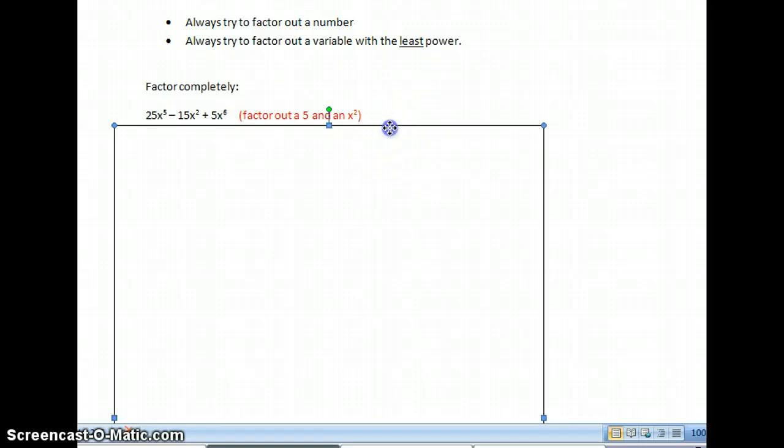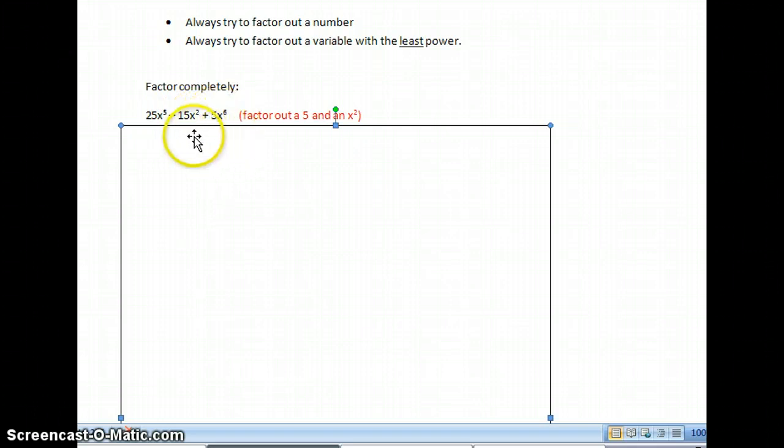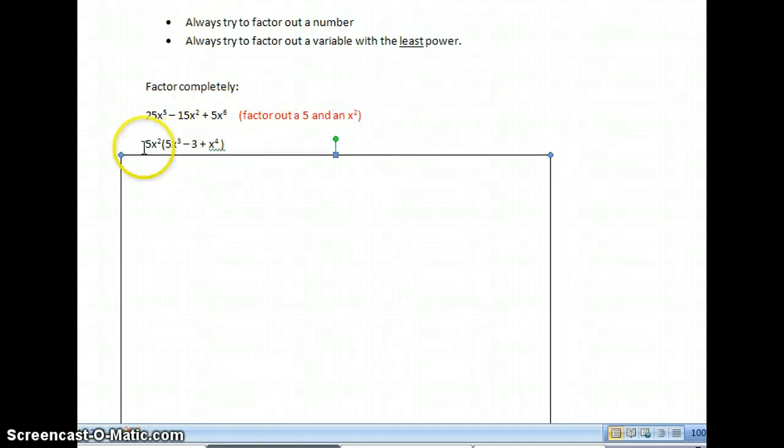The directions say factor completely 25x to the 5th minus 15x to the 2nd plus 5x to the 6th. First I'm going to look at just my coefficients 25, 15, and 5. The greatest common factor or number I can factor out of both of them is 5. Then I'm going to look at my x's and I'm going to look for my least power. So I have x to the 5th, x to the 2nd, x to the 6th. I'm going to factor out x to the 2nd. So what I will do is factor out the 5 and x to the 2nd.